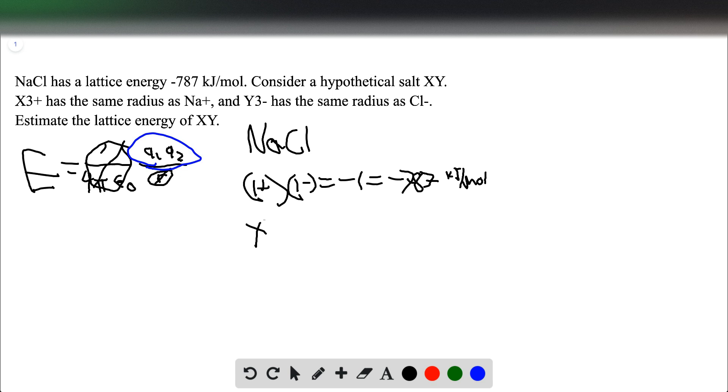And for our XY salt, so XY, we have a 3 plus on our X, and our Y has a 3 minus. So this will give us a negative 9, so we're going to multiply that 787 by 9, because our charge product of XY is 9 times bigger than sodium, which was 1.